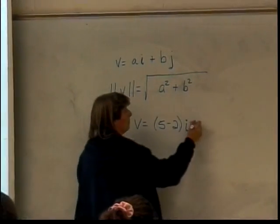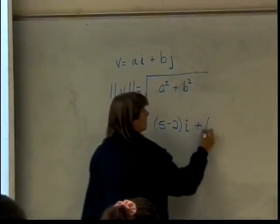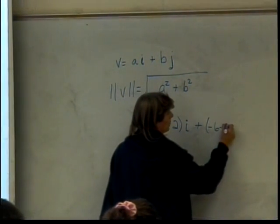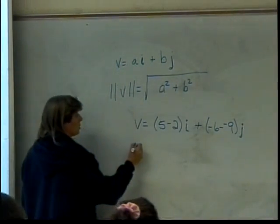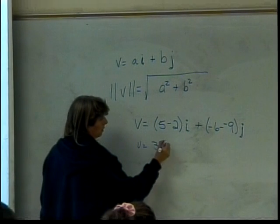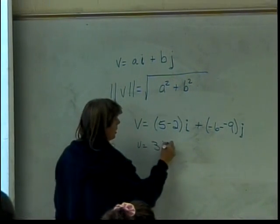Alright, how do I get my b? Negative 6 minus negative 9. And then I put that in front of my j. So, that will give me 3i plus 3j.